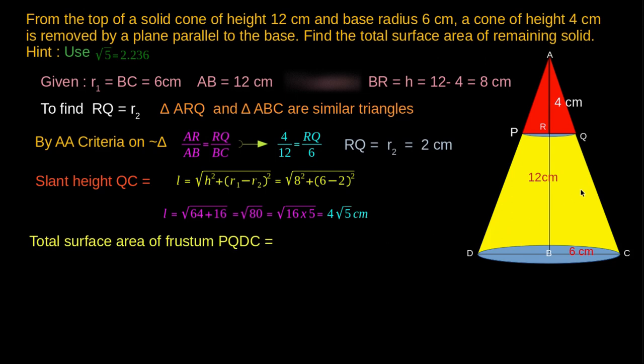Now, let us find the TSA of the frustum of the cone. TSA of the frustum of the cone is given by CSA of the frustum of the cone plus area of two bases, i.e., yellow part of this figure and the blue part of this figure.